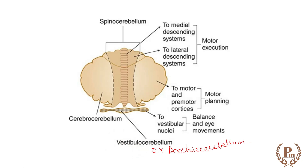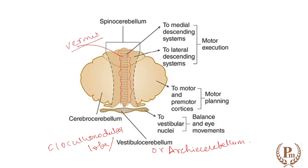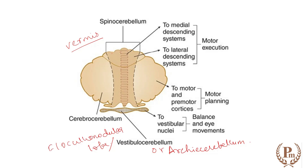The flocculonodular lobe is also known as the archicerebellum. The vermis area includes the vermis plus the intermediate part. If you remember the somatotopic representation of the body on the cerebellum: the lower limb is represented here, then the trunk, then the upper limb, and then the face. This part corresponds to the trunk, and these are the limbs.